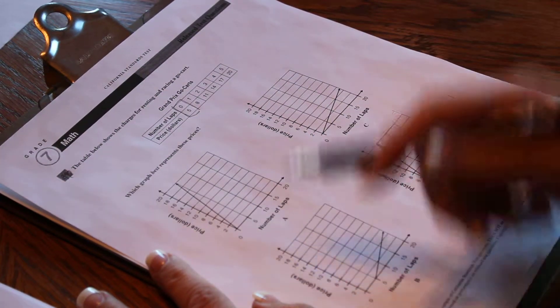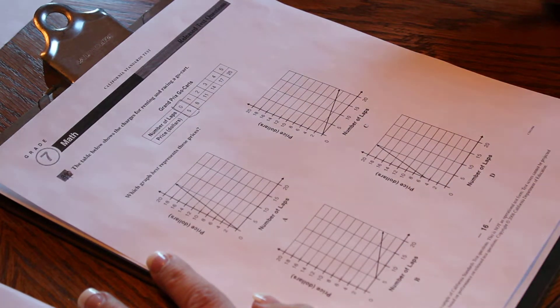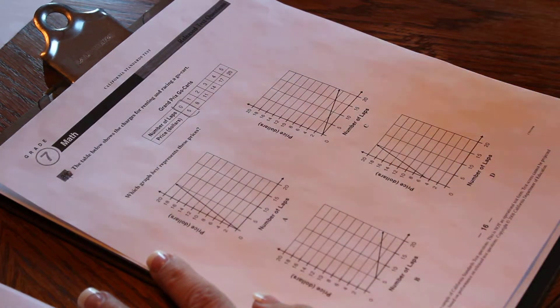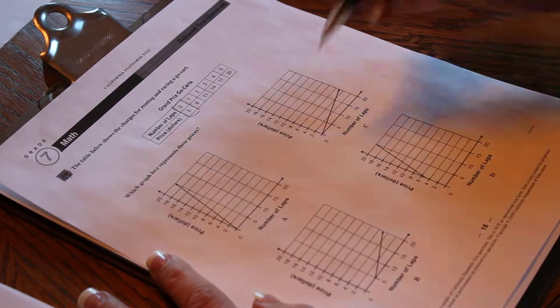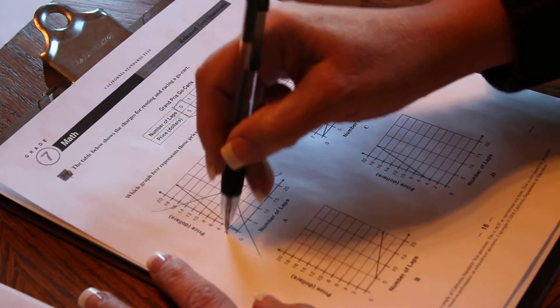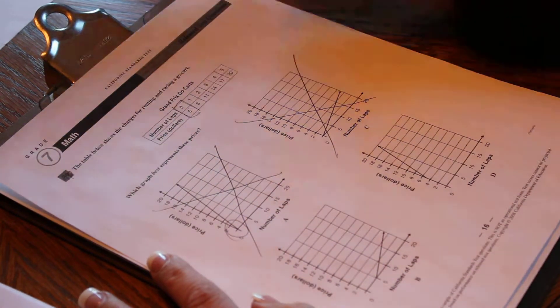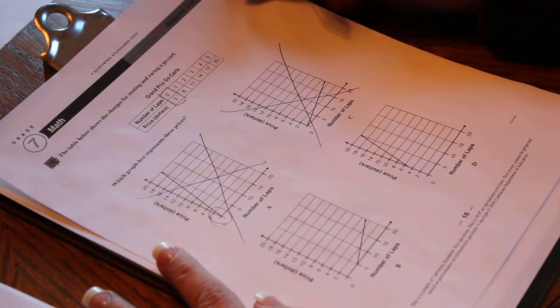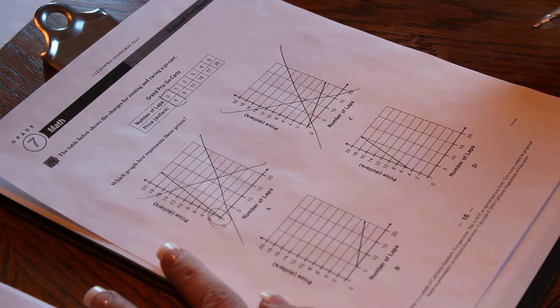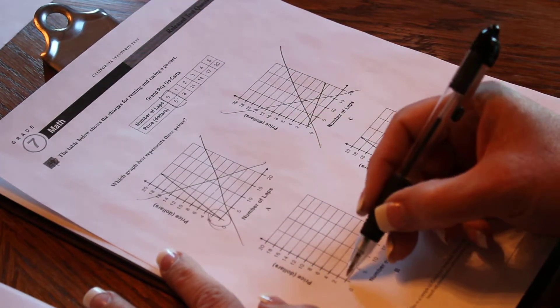So right here we're looking at which graph best represents these prices. You can already get rid of two graphs having not looked at anything else because both of these graphs start at zero and you have to pay $5 before you go anywhere. The next thing you have to do is look at the prices here.